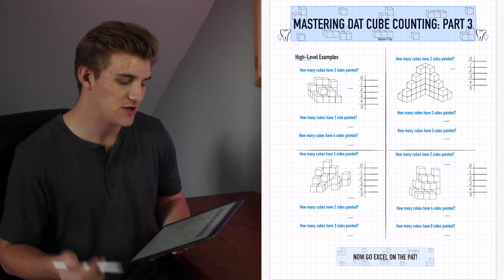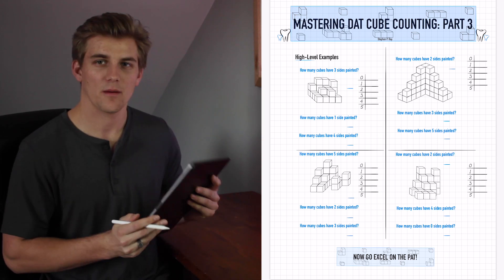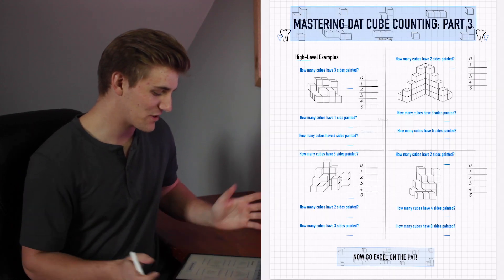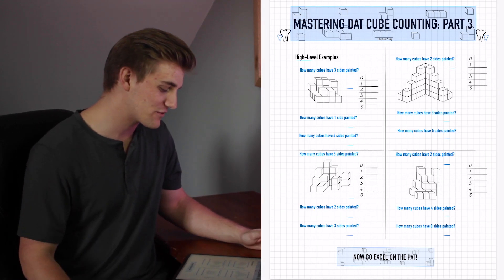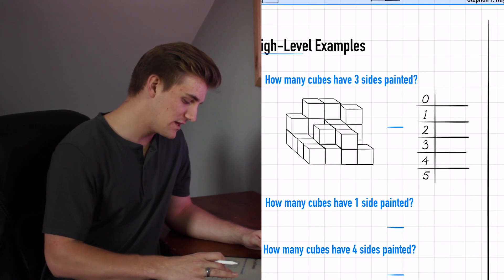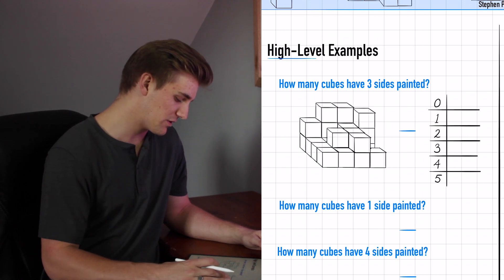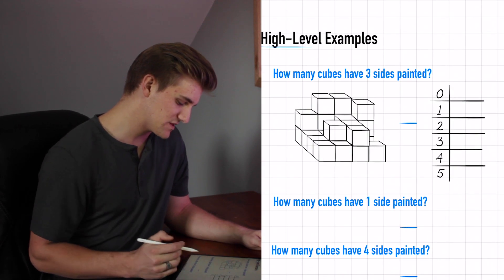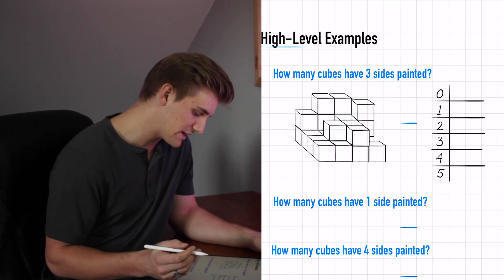Here we are with part three — four examples for this section. I'm also going to put the iPad on the table so I can be a little more comfortable, because the last couple of videos I held it for some reason, which was not ideal. So here we go right into our first high-level example. This is an interesting problem and we have three questions to answer. We'll go ahead and start counting.